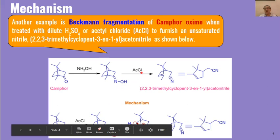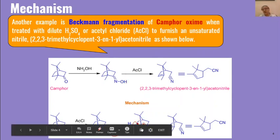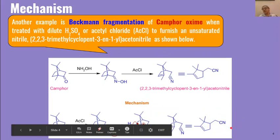The mechanism is as follows: the oxime reacts with acetyl chloride first, and H from the oxime and Cl from acetyl chloride are eliminated, giving an N-acetate intermediate. Acetate is a very good leaving group, which enhances fragmentation to give a carbocation. This carbocation then loses a proton to form a carbon-carbon double bond, giving the nitrile product. This nitrile can further undergo hydrolysis — partial hydrolysis gives amides, and complete hydrolysis gives carboxylic acids.